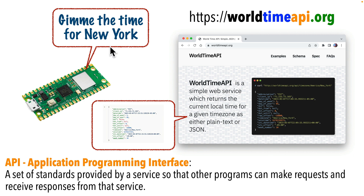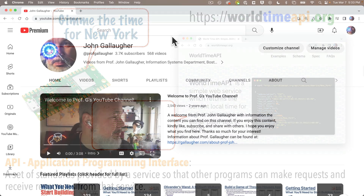The worldtimeapi.org website will respond to our request by providing us with data. Almost all API calls send back data in a format called JSON, but your browser might not be set up to display formatted JSON — it might look like a jumble of text running together. Let's see if your browser is set up to show JSON, and if not, I'll show you where you can download Chrome or Safari extensions to get things formatted nicely.